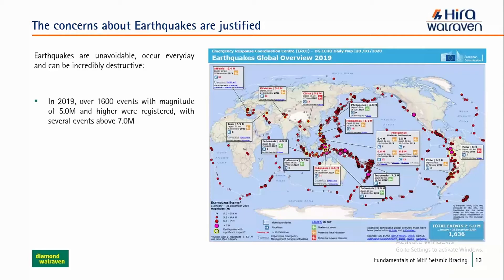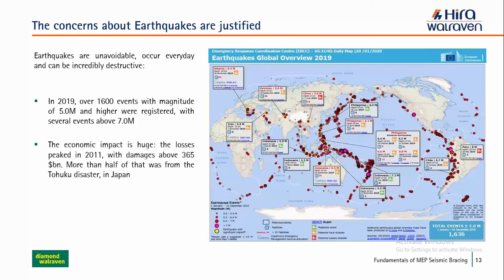In 2019, there were over 1,600 seismic events with a magnitude of 5.0 M or higher, including several events at 7.0 M. The overall economic impact of earthquakes reached 365 billion dollars — recorded in 2011 — with more than half of that value coming from the Tokyo disaster in Japan. This data shows a very large impact from seismic events globally.